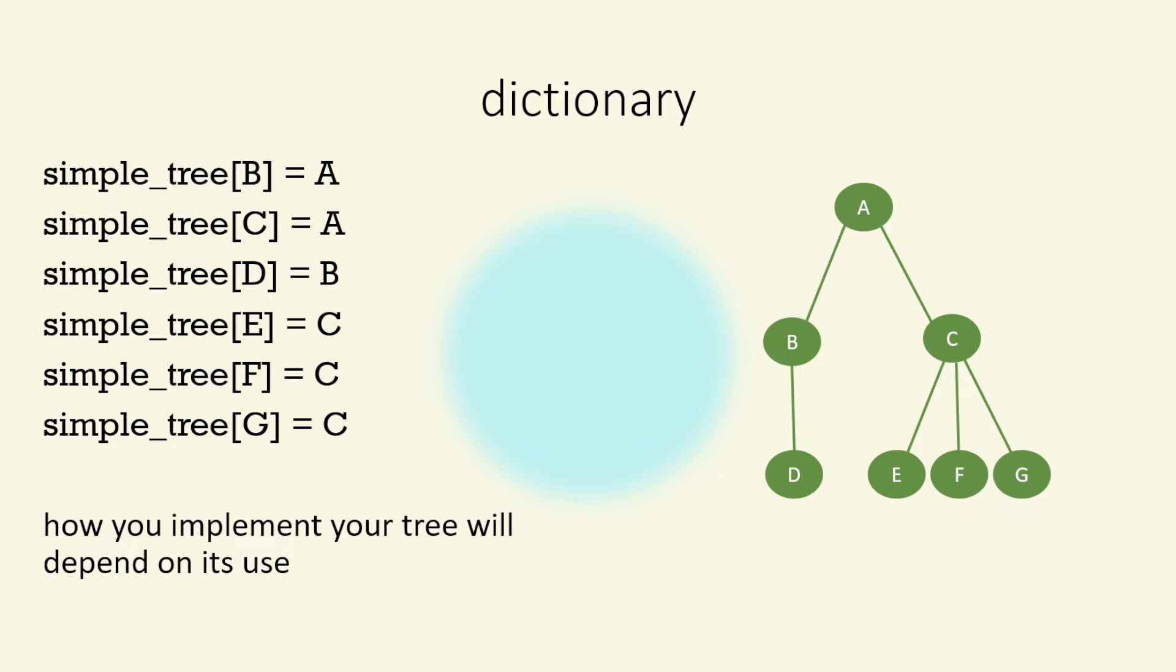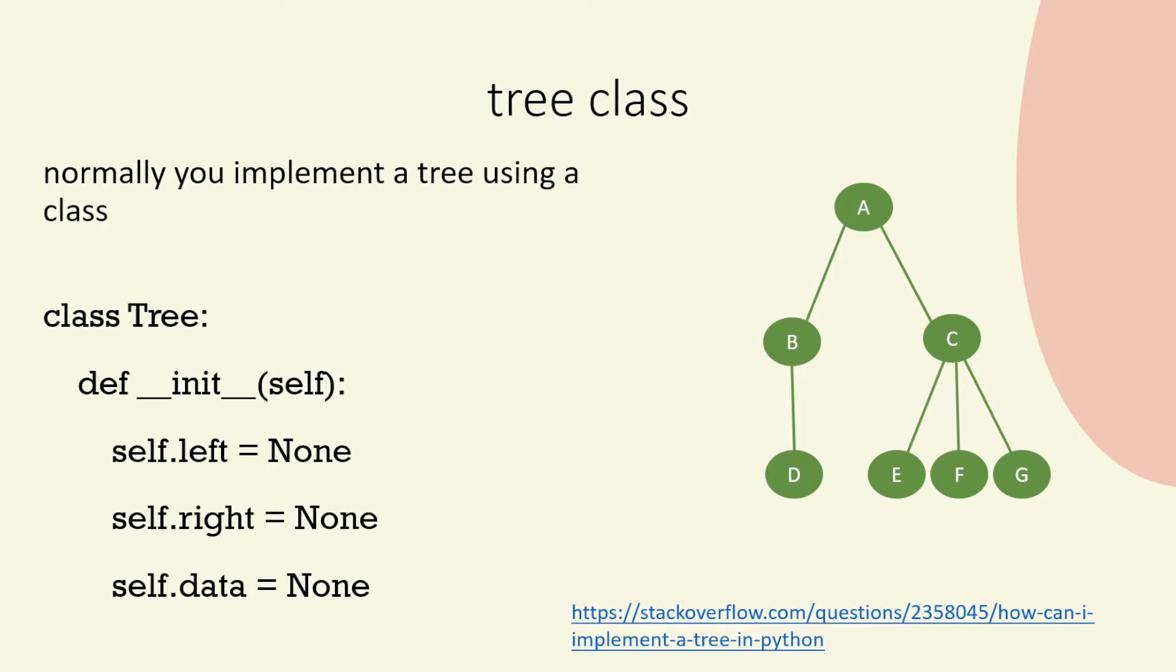Now, would you use a dictionary when you implement a tree? Well, again, that depends on what task you want to do. Primarily in Python, we use classes when we implement a tree. So we may, for example, have a class tree. And then we can think of what's on the left and what's on the right, and also what data we have.